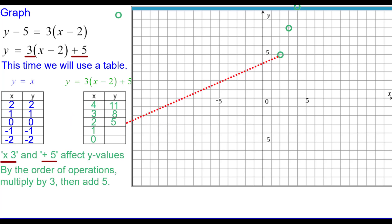2 comma 5 and so on. 3 times negative 1 plus 5 is negative 3 plus 5, which is 2. 1 comma 2. And finally, negative 2 times 3 is negative 6 plus 5 is negative 1. So 0, negative 1.